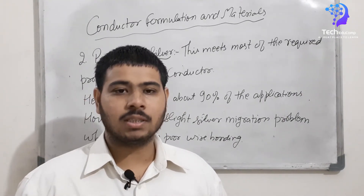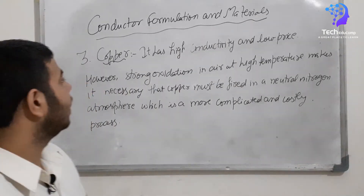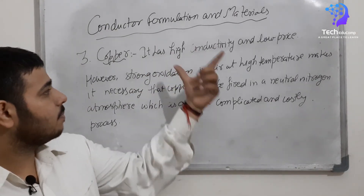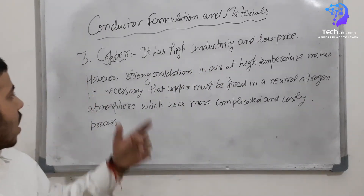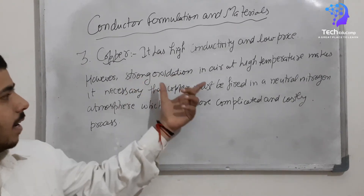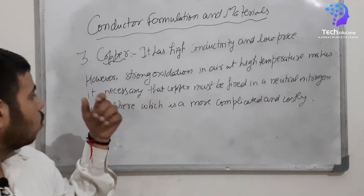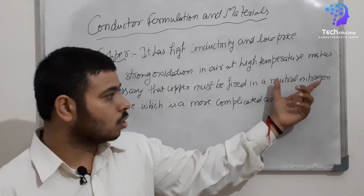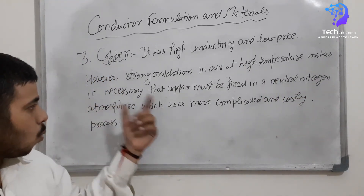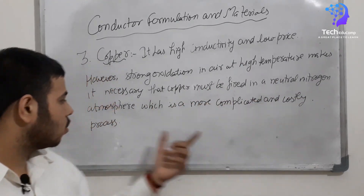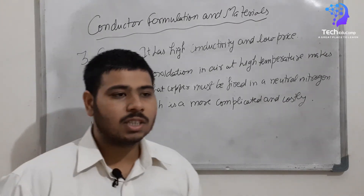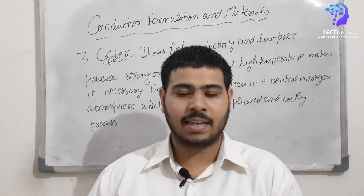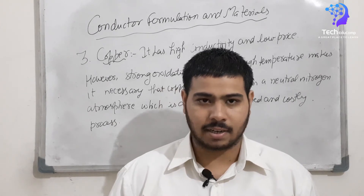The next and last material is copper. Copper has high conductivity but is not ideal because of strong oxidation in air at high temperatures, which makes it necessary that copper must be fired in a neutral nitrogen atmosphere — a more complicated and costly process. These are the materials used for making thick film conductors.